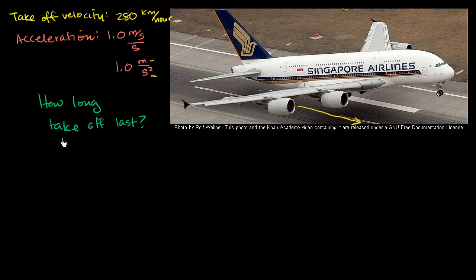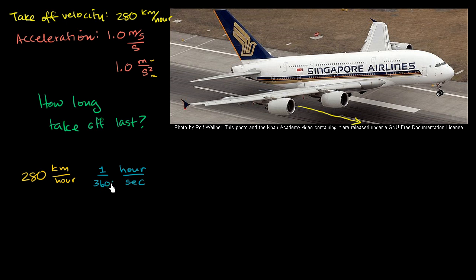Starting with 280 kilometers per hour, let's first convert hours to seconds. Since we have hours in the denominator, we need hours in the numerator and seconds in the denominator. In one hour there are 3,600 seconds — 60 seconds per minute times 60 minutes per hour. Multiplying by (1 hour / 3,600 seconds) cancels the hours, giving us 280 divided by 3,600 kilometers per second.